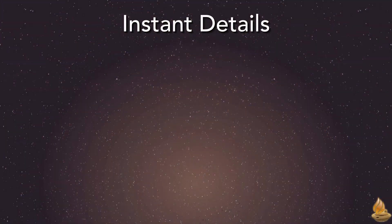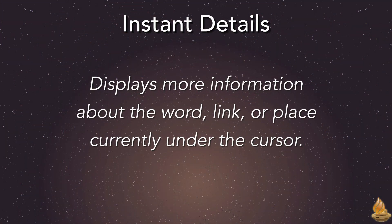Accordance's Instant Details displays more information about the word, link, or place currently under the cursor. Among other things, it lets us study a Bible or text quickly and efficiently. This podcast is going to focus on this particular use.